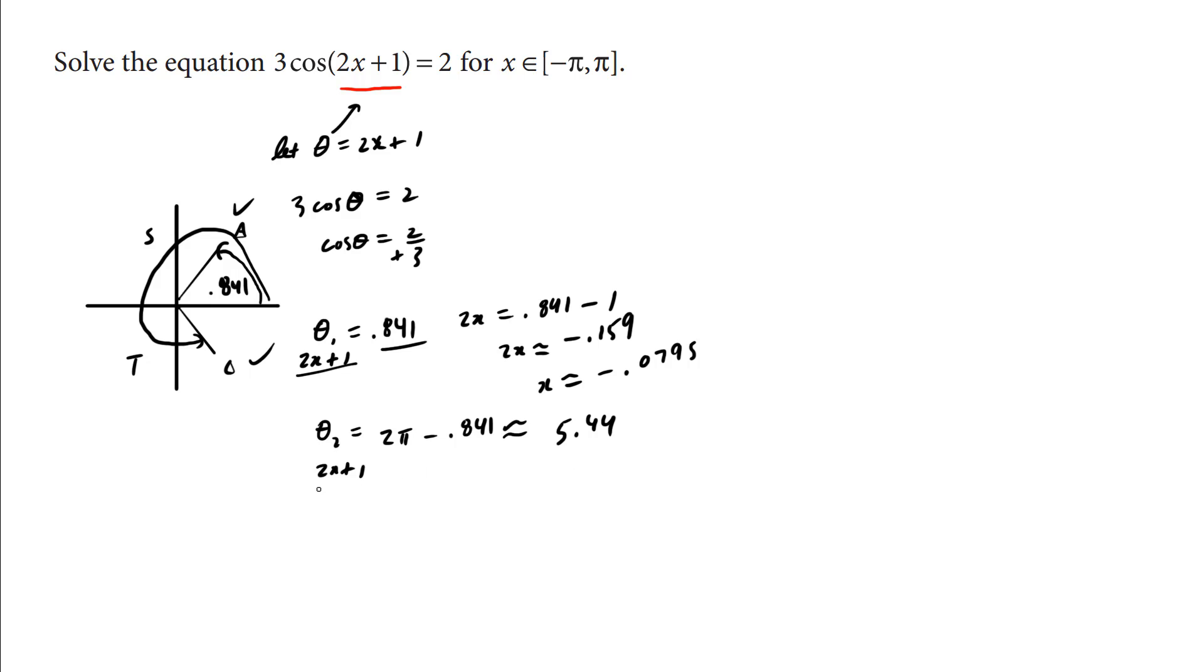And you do the same over here. You have 2x plus 1 is equal to 5.44-ish. Subtract 1 from both sides. You have 2x is approximately 5.44 minus 1. It's going to be 4.44-ish. Divide both sides by 2. You get x is approximately 2.22-ish.